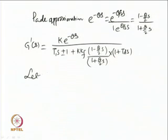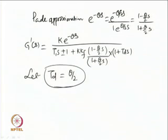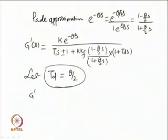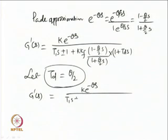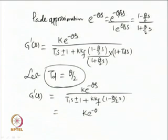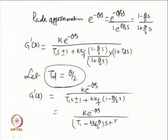When Td is equated to θ/2 — the choice of derivative time constant for the PD controller — then in the PIPD control structure with Td = θ/2, G'(s) reduces to K·e^(−θs) / [(T₁s ± 1) + K·Kf·(1 − θ/2·s)], which can be written as K·e^(−θs) / [(T₁ − K·Kf·θ/2)·s + (K·Kf ± 1)].